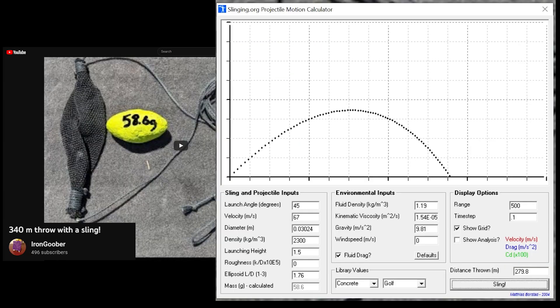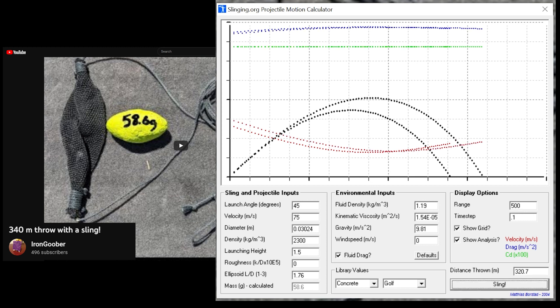The results of this app and any app are qualitative, and this can be seen in Iron Goober's throw, which achieves longer range in real life. The reason is that apps don't take into account lift and angle of attack changes through the flight.